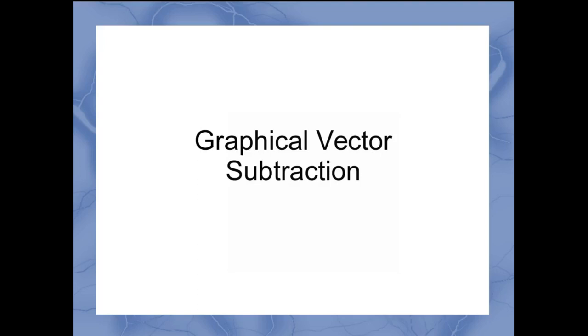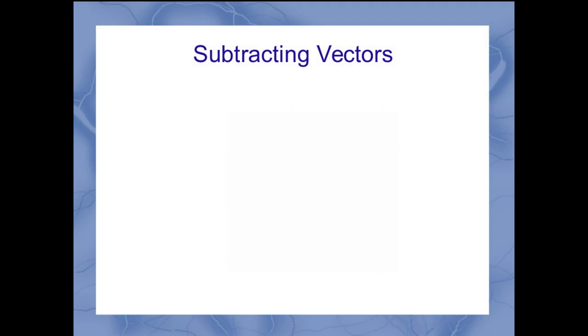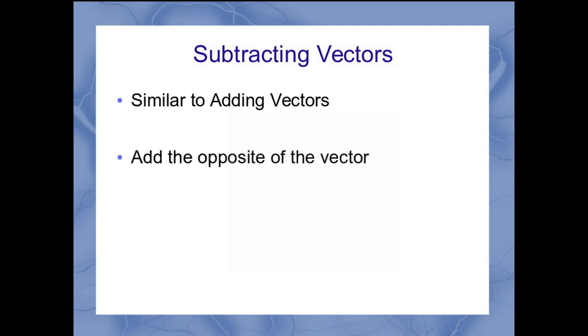Now that we've looked at graphical vector addition, we want to look at graphical vector subtraction. When we're subtracting vectors, it's really similar to the processes we used when we were adding vectors graphically. Specifically, one of the things we can look at is it's like adding the opposite of the vector. So if I think of my equation a minus b, it should be equal to a plus a negative b.